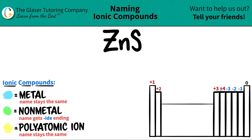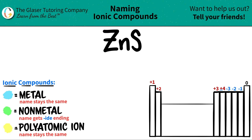Today we are going to be naming the ionic compound ZnS. Now we have two different elements here. We have Zn, which is zinc, and we have S, which is sulfur.